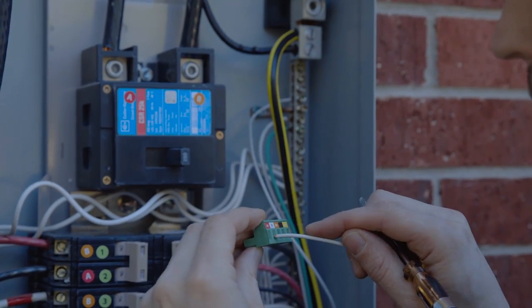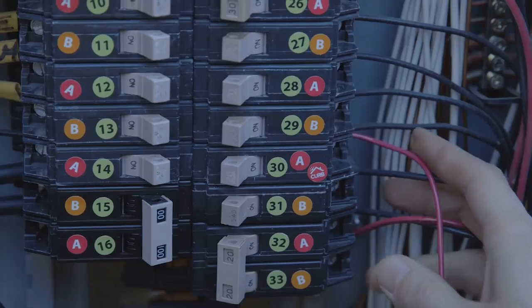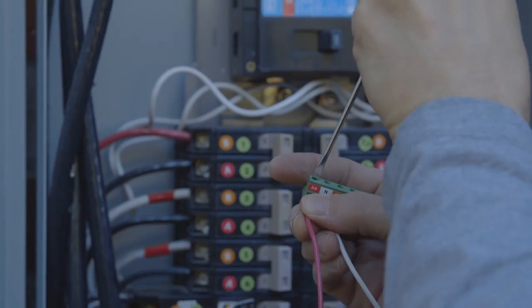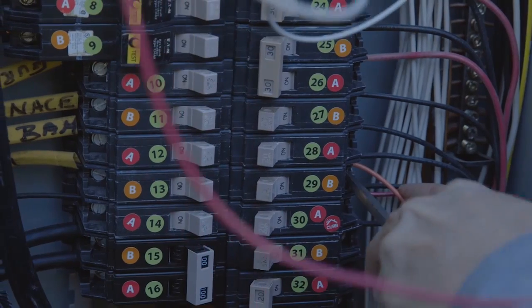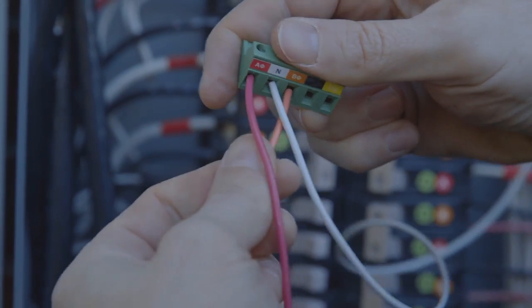Connect the white neutral wire from the neutral rail to the white N port. Next, we need to T-connect the red power wire from the red Curb breaker to the red A port, and T-connect the orange power wire from any orange B breaker to the orange B port.